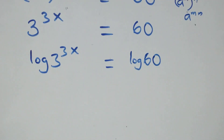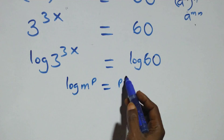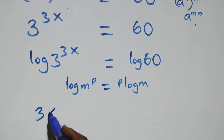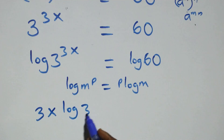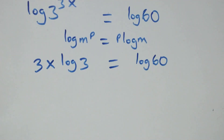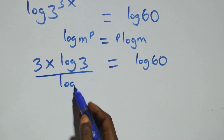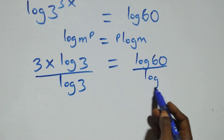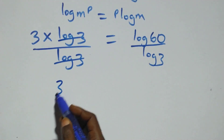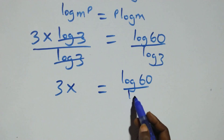Then here we apply the power rule of logarithm: log of m raised to power φ is the same thing as φ·log m. So we have 3x·log 3 equals to log 60. Next step, we divide both sides by log 3. Here log 3 cancels, and 3x equals to log 60 over log 3.